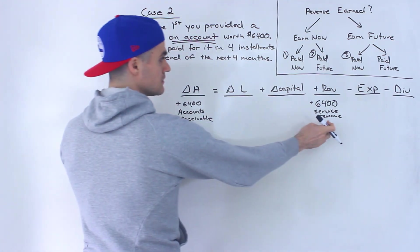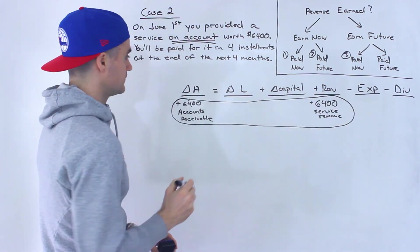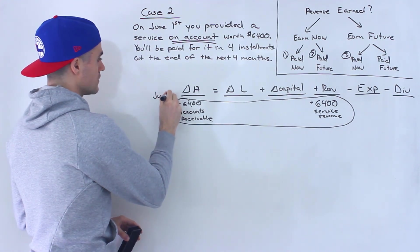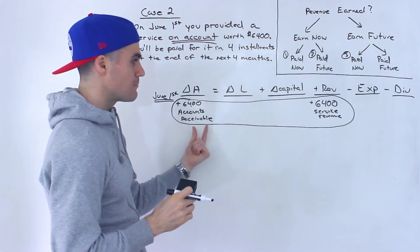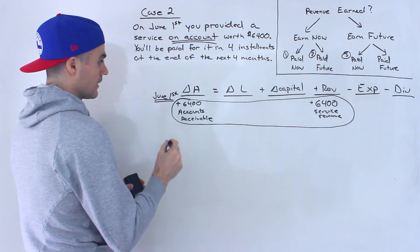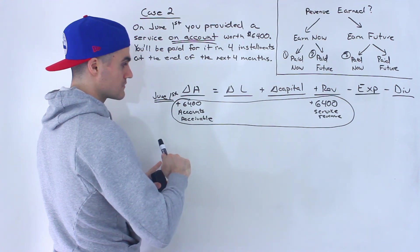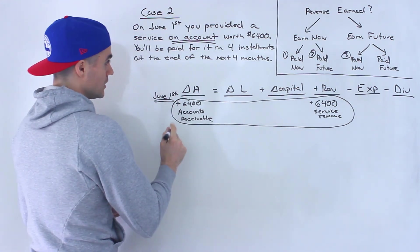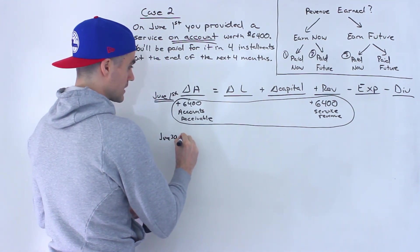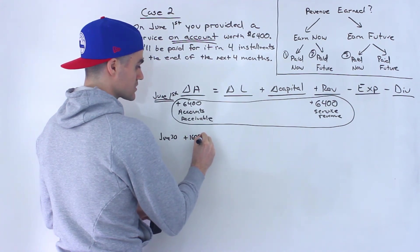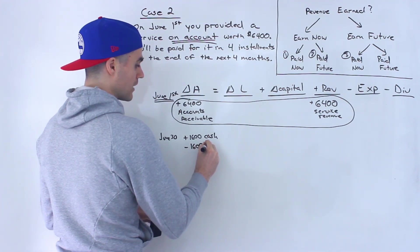Notice in this case the left side and the right side are balancing out, so we're good. This entry is on June 1st. As time goes by, you get paid for the service you already provided in four installments. $6,400 divided by four gives us $1,600. So at the end of June — June 30th — $1,600 cash comes in and the accounts receivable goes down by $1,600.